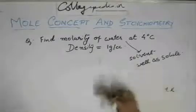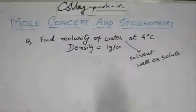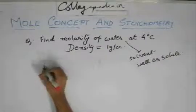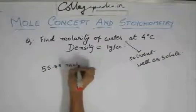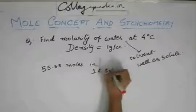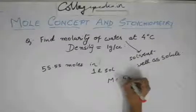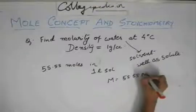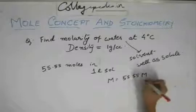So the molarity — how did we define it? The number of moles in 1 liter of solution. Here we directly got 55.55 moles in 1 liter of solution. So its molarity would be 55.55 molar. The unit is moles per liter, or you call it molar.